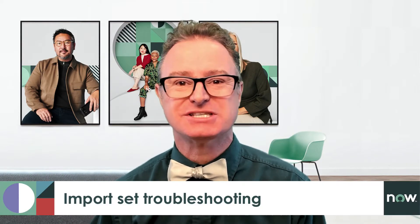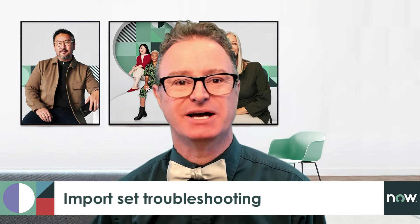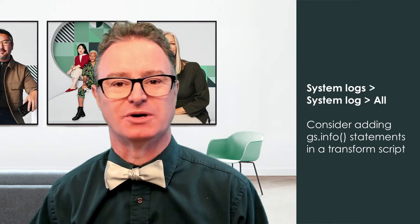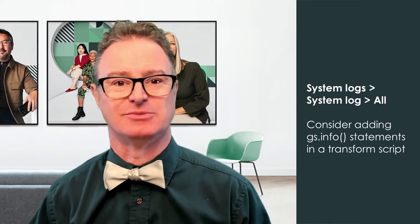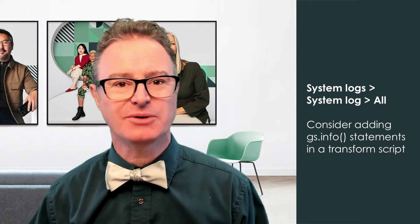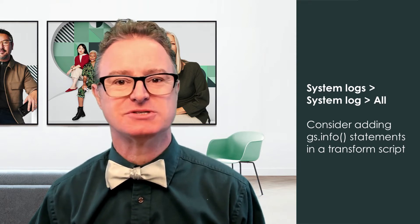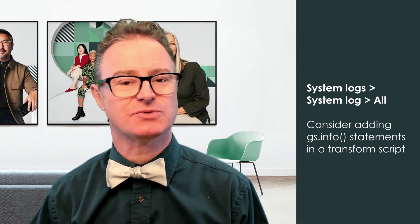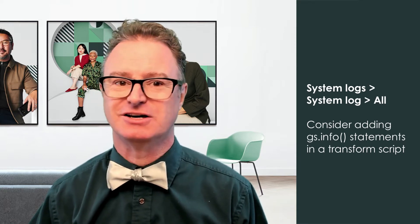In this video, we'll discuss some ways to identify import set issues and what you can do about them. There are times when things don't always go as planned. The first place to look when we run into problems with imports is the system log. If the system log doesn't have anything useful, you might want to try adding a GSINFO statement or two to your transform script to ensure it's running as expected. Then check the logs again.